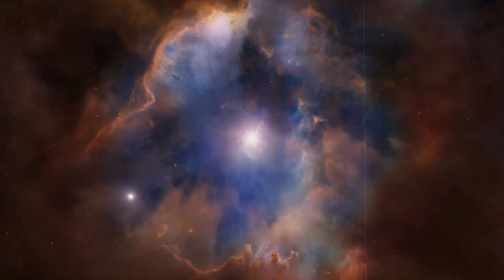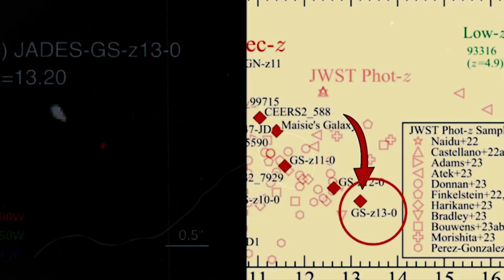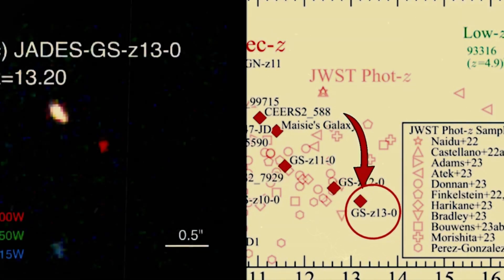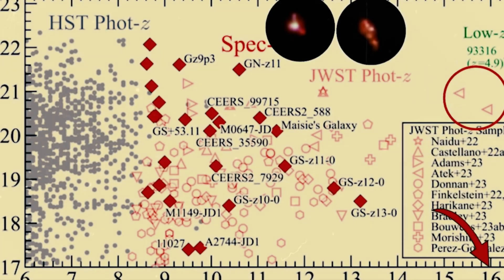The chart also pinpointed another record breaker: GES Z13-0, the most distant confirmed galaxy yet, shining from 13.47 billion light-years away. But then there's something even stranger lurking in the numbers. Two galaxies sitting at a redshift of around 16.